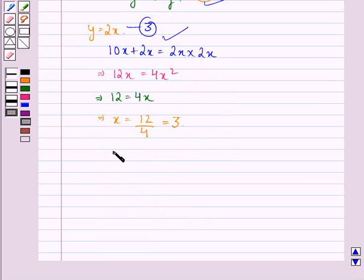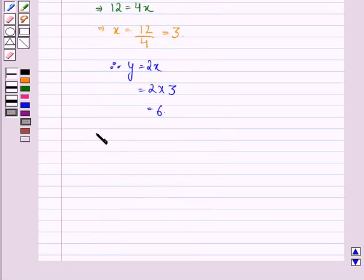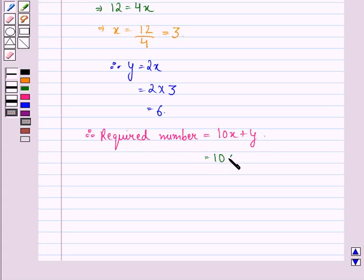Therefore, y equals 2x, that is 2 times 3, which equals 6. Therefore, the required number is 10x plus y, that is 10 times 3 plus 6, which equals 30 plus 6, which equals 36.